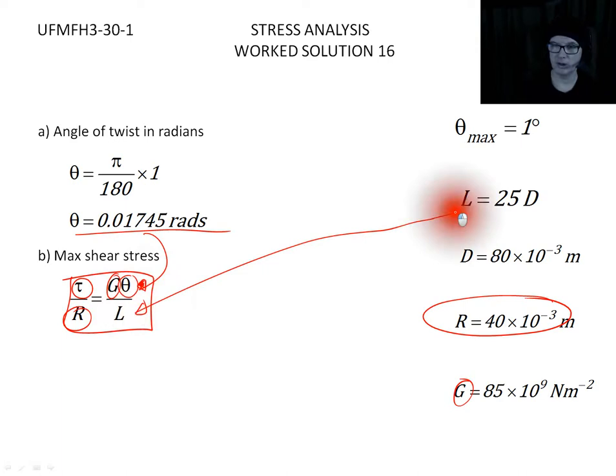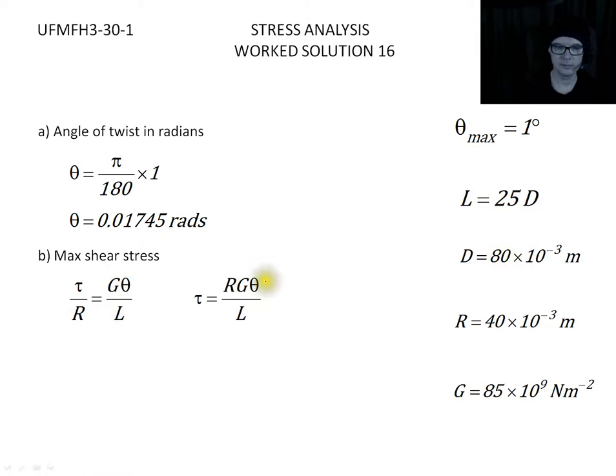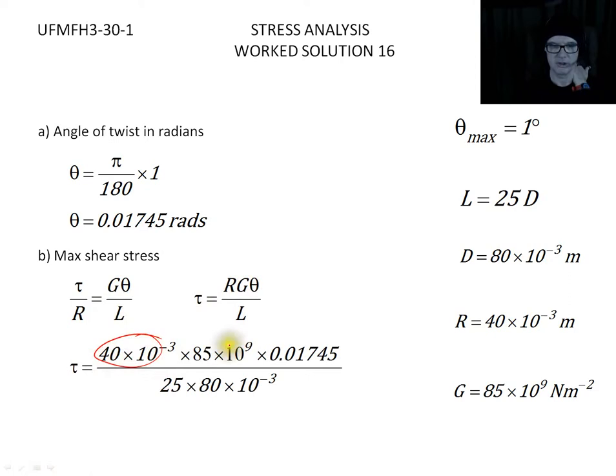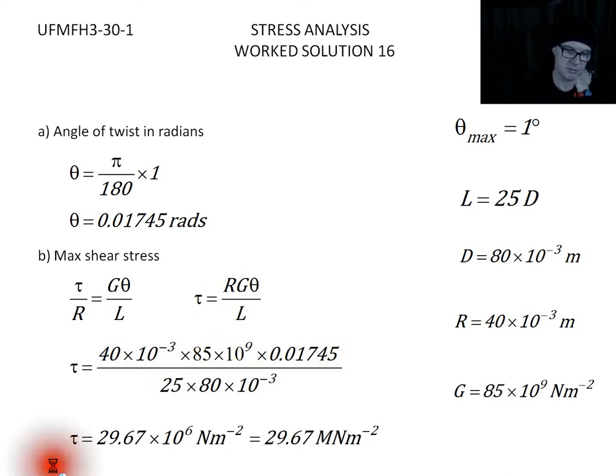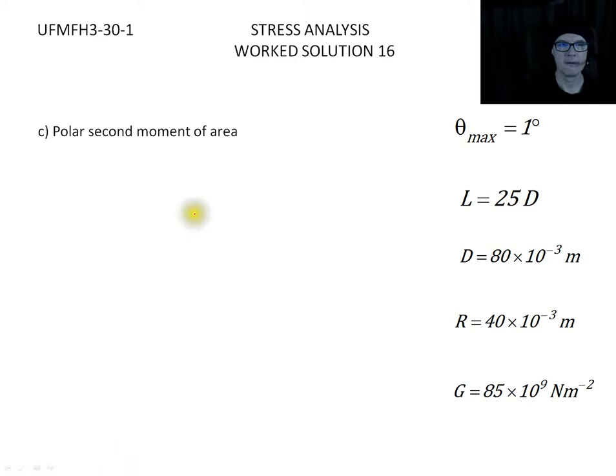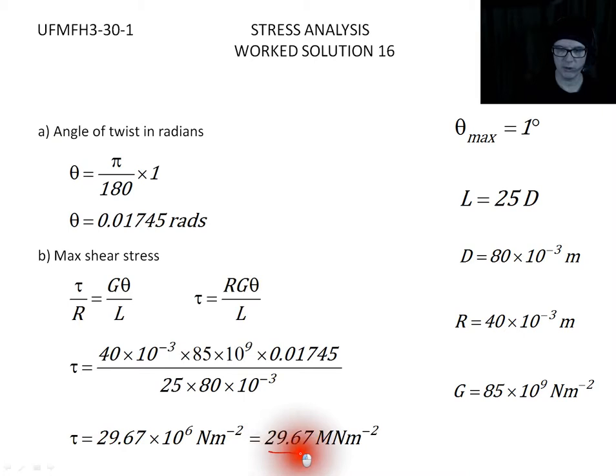I'll rearrange this so that I'm looking for the shear stress and I'm substituting my numbers: the radius, the modulus, the angle using radians, and the length which is based upon 25 times the diameter. This gives me about 30 megapascals of shear stress, 29.67 meganewtons per meter squared.